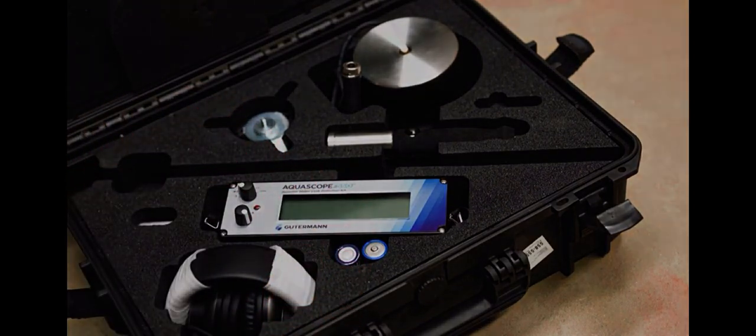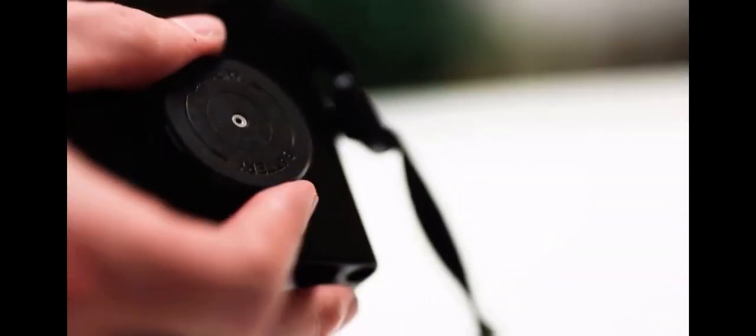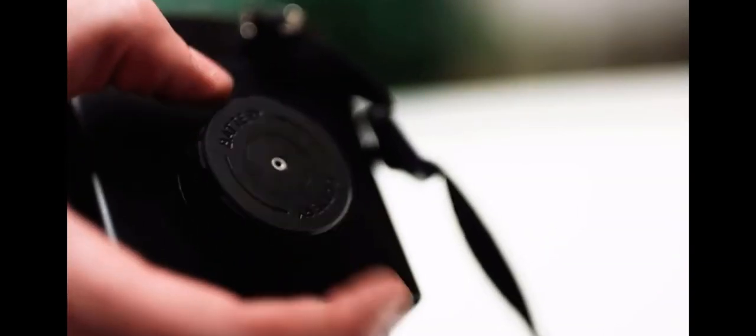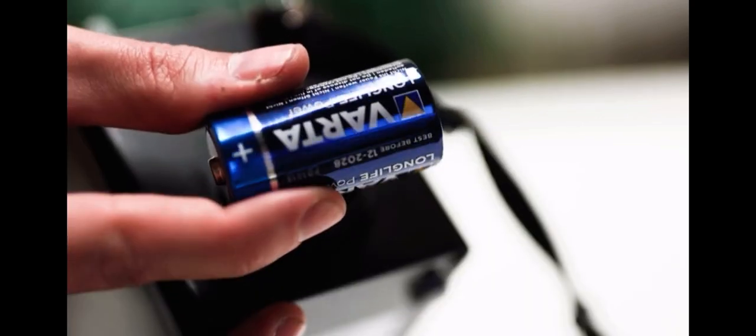To assemble the ground microphone, first unscrew the battery cap on the amplifier and insert the batteries as shown, according to the instructions on the battery cap.